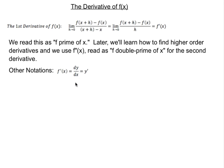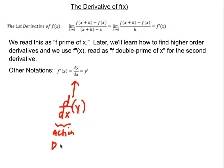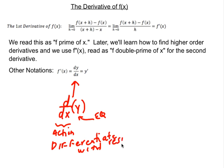We also have this dy/dx notation. To differentiate is a mathematical action — you differentiate with respect to a variable. The action is differentiate, and d/dx means differentiate with respect to x. Later we'll learn that we can differentiate with respect to t for time, r for radius, or theta for angle — usually in a polar situation, which we'll cover in BC calc.